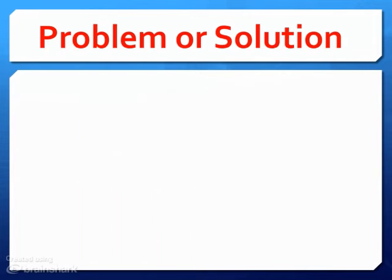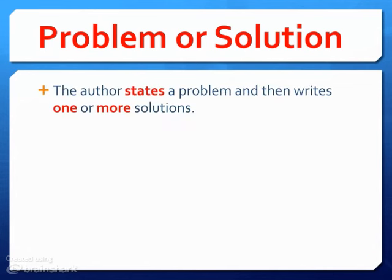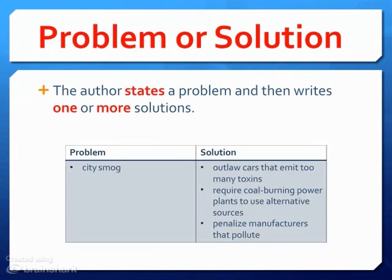The final type of text structure that we'll look at is problem or solution. This is when the author states a problem or some type of conflict, and then writes one or more solutions or ways to solve that problem. For example, let's say the problem is city smog. The author would identify that problem and then give solutions such as outlawing cars that emit too many toxins, requiring coal-burning power plants to use alternative sources, and penalizing manufacturers that pollute. The author would argue why these solutions would be effective to solve the problem of city smog.